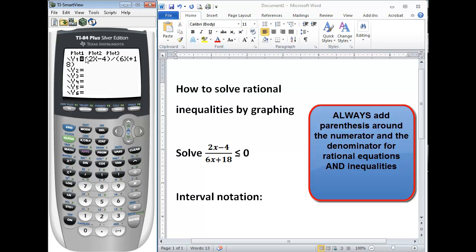Now the calculator knows we want to perform 2x minus 4 first and all of that is in the numerator, it's all above our division sign, and perform 6x plus 18 as one step together, all that's in our denominator.